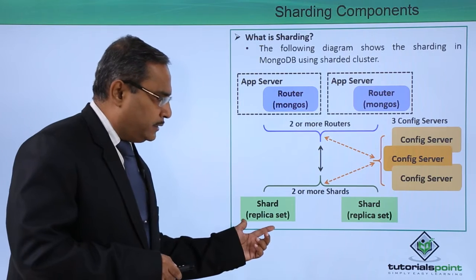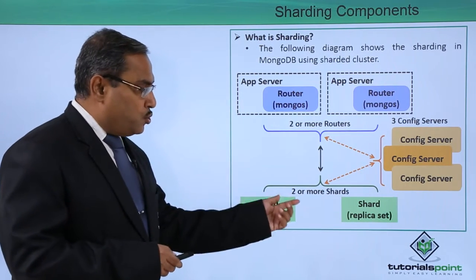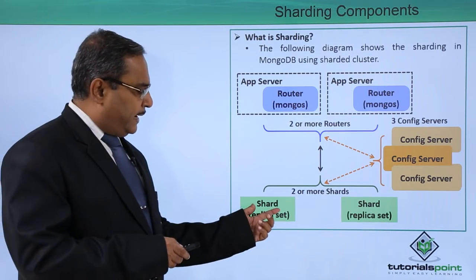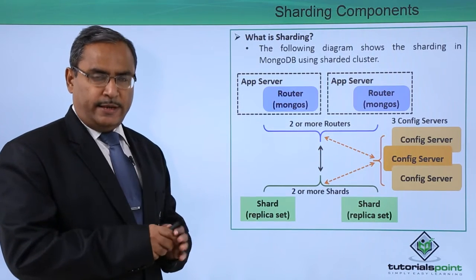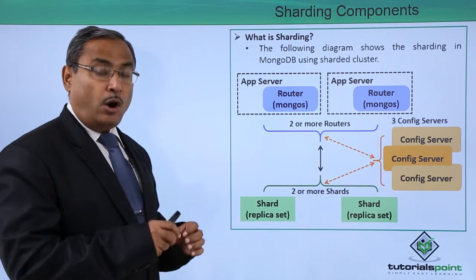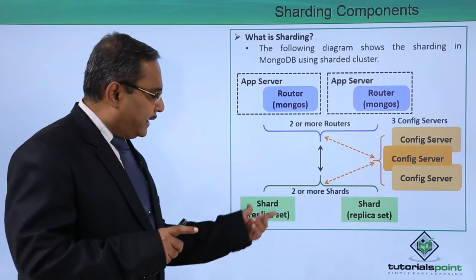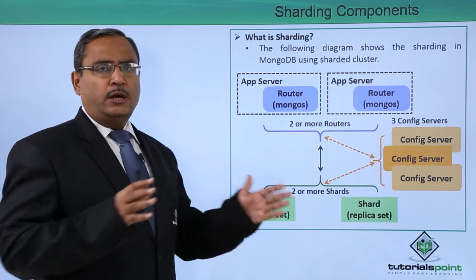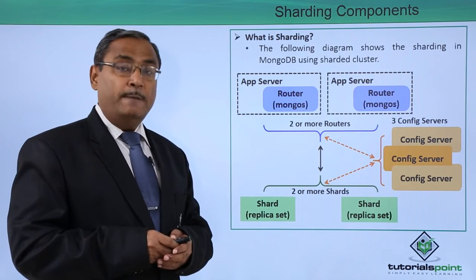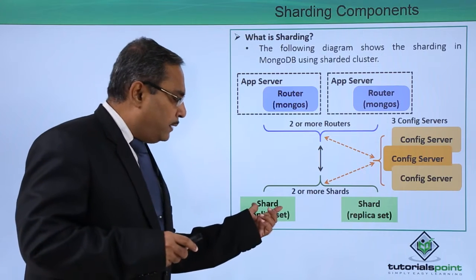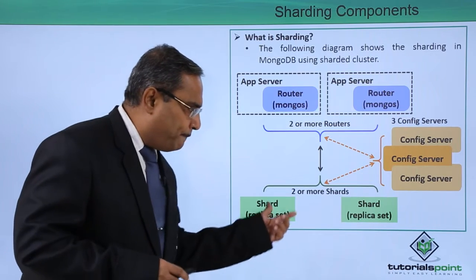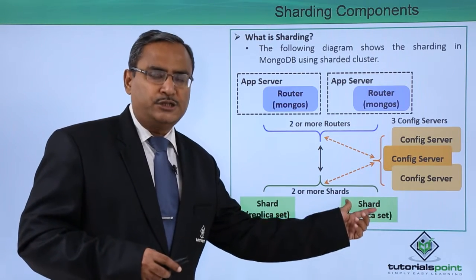We can find that here we are having some set of shards. Two or more such shards will be there in the respective shard cluster. In each and every shard we are having the replica set. Replica set means multiple MongoDB instances will be running on the same data set. Out of all these MongoDB instances, one instance will be the primary and the rest will be the secondary nodes. Only one primary node and multiple secondary nodes will be there in one replica set, and you can have multiple such replica sets in the shard cluster.